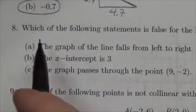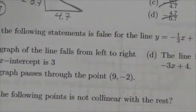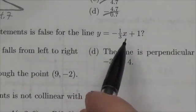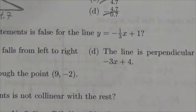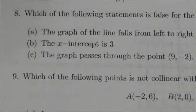Hi, everyone. This question here states which of the following statements is false for the line y equals negative one-third x plus one? Okay, negative one-third x plus one. So what we got to do here, which one's false? We got to go through each one of these.